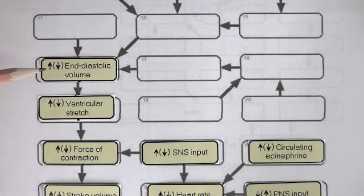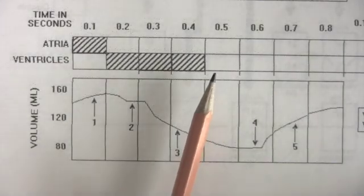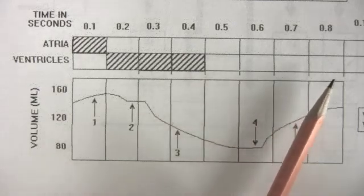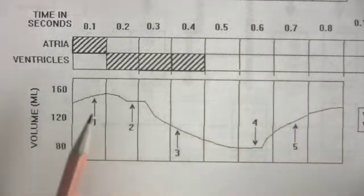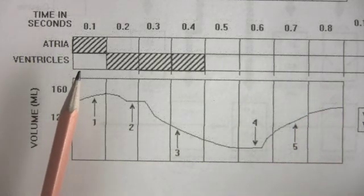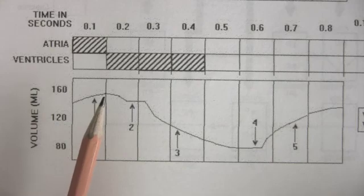Remember, end diastolic volume is the volume of blood in the ventricles at the end of diastole. Diastole is the state of relaxation of the ventricles. It occurs during the 5th through the 8th, 10th of a second of the cardiac cycle, as well as the 1st, 10th of a second of the next cycle. So this point is the end of diastole, and notice the volume is at its highest point.